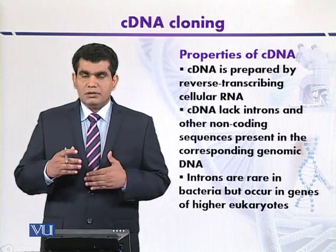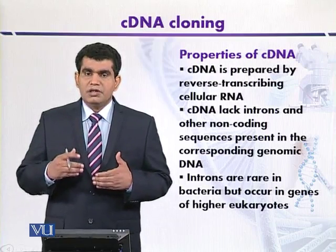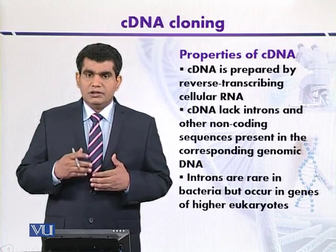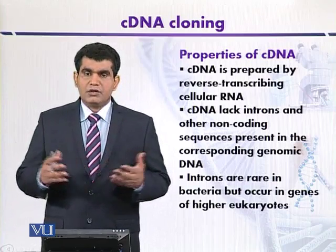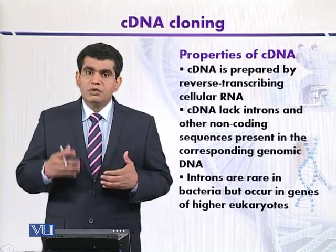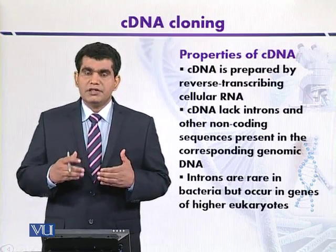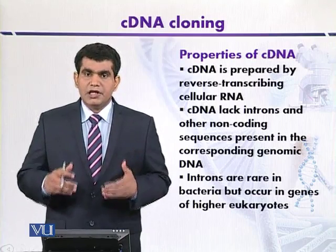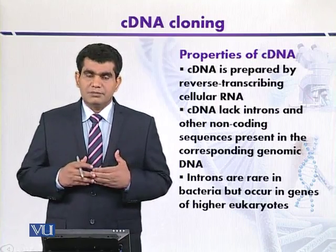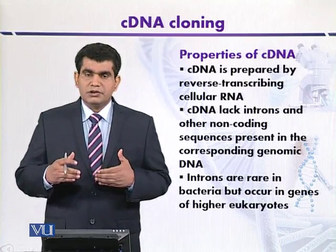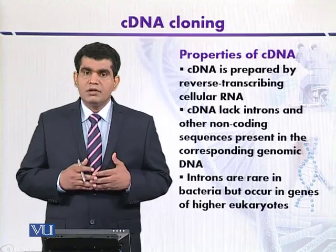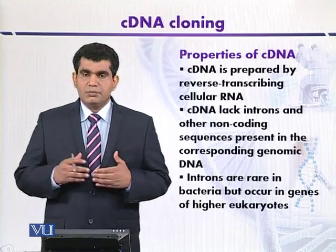cDNA can be produced by subjecting messenger RNA to reverse transcriptase. Certain viruses contain RNA as their genome and are called RNA viruses, the most common example being retroviruses. Retroviruses have the ability to convert RNA into DNA because they contain an enzyme called reverse transcriptase. This ability of reverse transcriptase can be used in the laboratory to produce a copy of DNA from RNA, which is called cDNA, and this cDNA can be used to construct libraries.